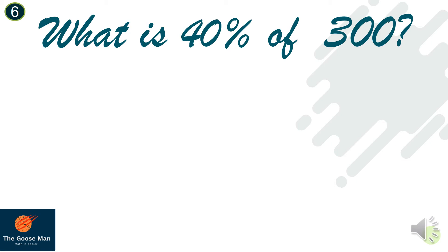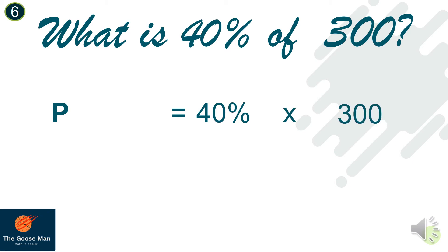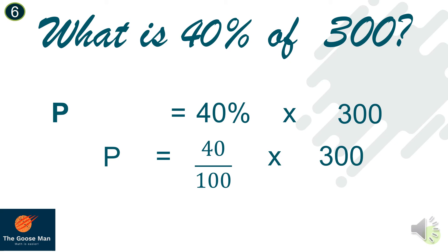Let's try another example: What is 40% of 300? The percentage is equal to 40% times 300. I can convert 40% as a fraction: 40 over 100, times 300. Factoring out 100 and 300: 100 divided by 100 is 1, and 300 divided by 100 is 3. So to get the percentage, I simply multiply 40 times 3. Percentage is equal to 120.